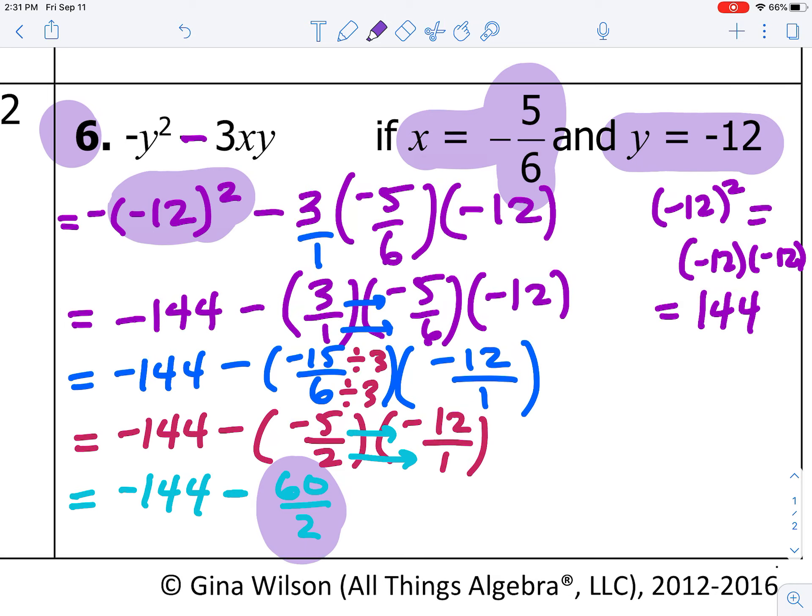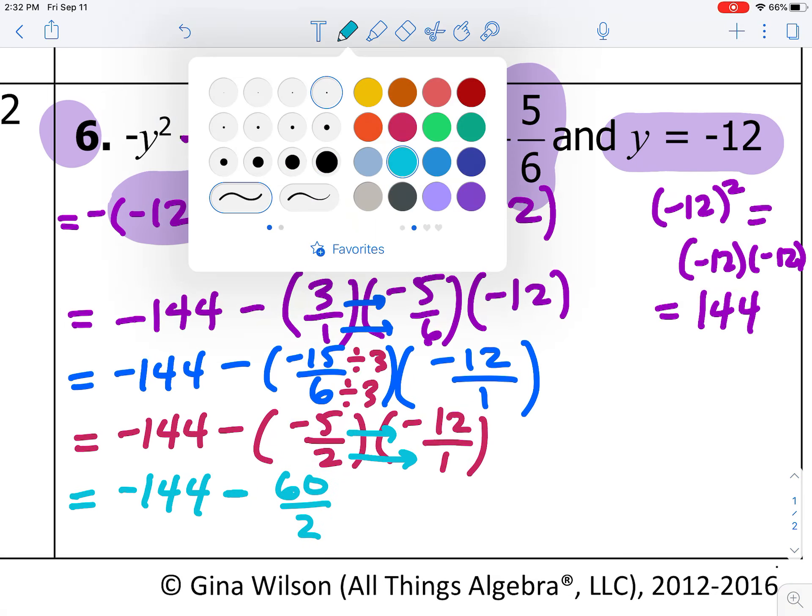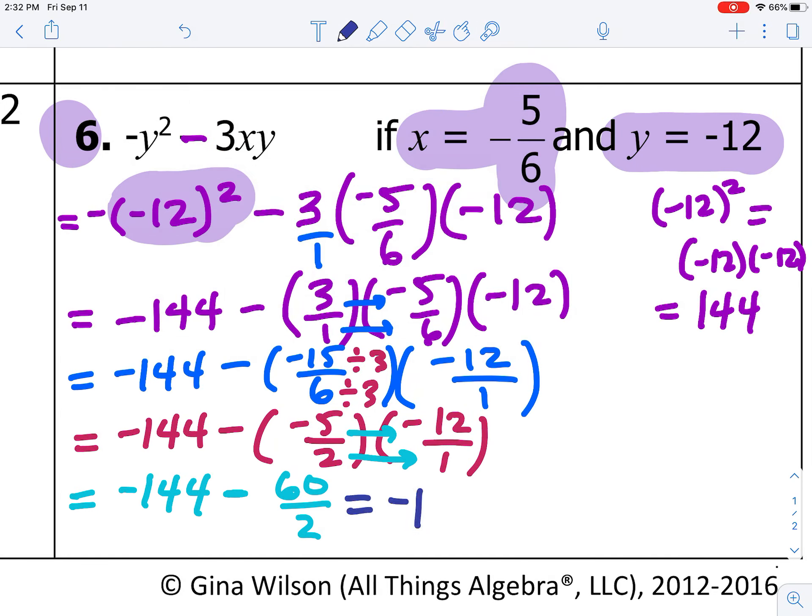So, I notice I need to divide before I subtract. So, the next thing we need to do is simplify 60 over 2. So, negative 144 minus 60 divided by 2 is 30.